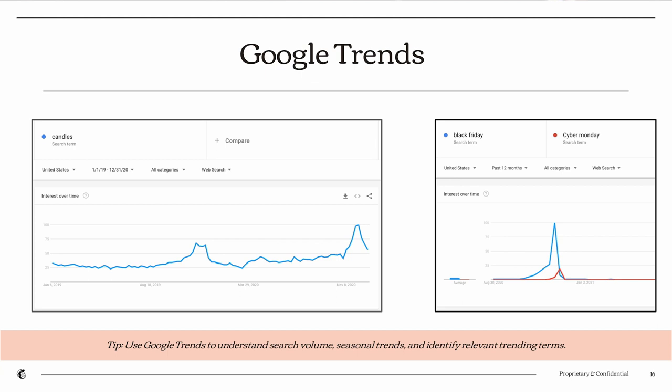Google Trends at google.com/trends is a great tool to understand seasonality over time for different topics — products you sell, different businesses, or even broader categories. For example, searching 'candles' shows peak searches around December, which might prompt you to flight your budget more heavily during that period to avoid losing impression share from too low a budget. You can also search terms like 'Black Friday' or 'Cyber Monday' to see when those peak seasons start rising, and adjust budgets accordingly. Note this is filterable by country if you operate internationally.